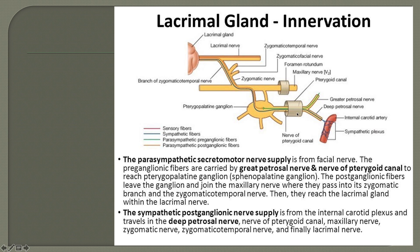Through the maxillary nerve there are two roots, and to those two roots there is the suspension of the pterygopalatine ganglion within this fossa. Posteriorly the fossa has an opening called the pterygoid canal. The pterygoid canal opens posteriorly into the foramen lacerum, which lodges the internal carotid artery, surrounded by a sympathetic nerve plexus. This plexus gives out a branch called the deep petrosal nerve — a sympathetic nerve.